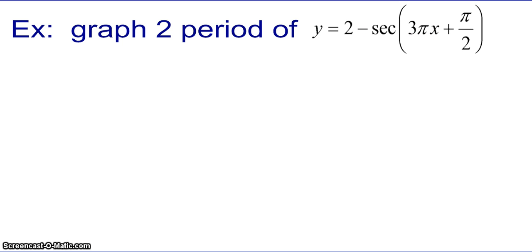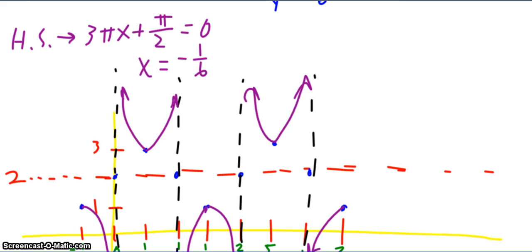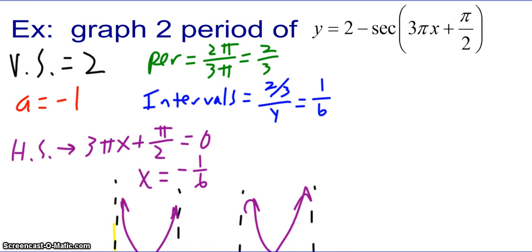So first, I want you to graph two periods of y equals 2 minus secant of 3π x plus π halves. Pause the video, unpause it when you're ready to check your work. All right, so what you see in purple here should be your graph for two periods of this secant function.